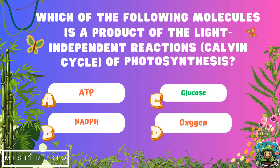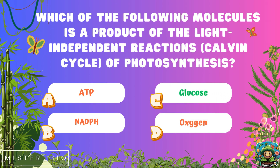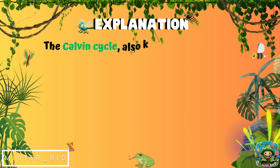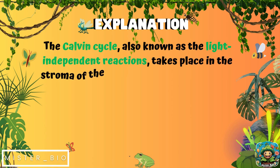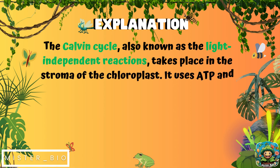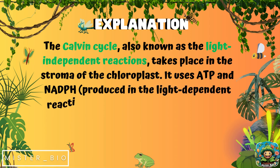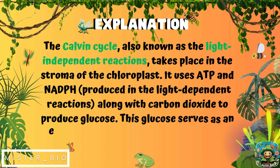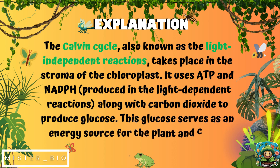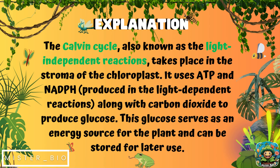The correct answer is C, glucose. The Calvin cycle, also known as the light-independent reactions, takes place in the stroma of the chloroplast. It uses ATP and NADPH, which are produced in the light-dependent reactions, along with carbon dioxide to produce glucose. This glucose serves as an energy source for the plant and can be stored for later use.